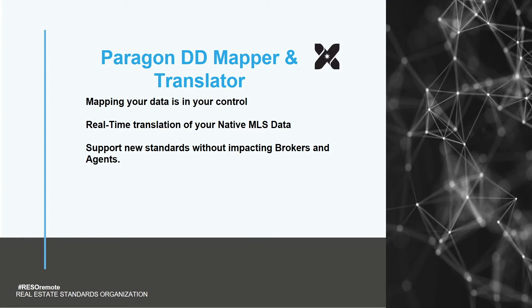Paragon utilizes these mappings to dynamically convert your data on the fly when requested by third-party vendors. What that means is all the feeds you've set up over the years, all the payloads you've identified and security attached — when they are consumed via the Web API, all of those payloads are now in real time converted to a Data Dictionary format. Both of these utilities allow you to support Data Dictionary without impacting your members. Your input forms and business rules remain unaffected, while the data can come out of Paragon in a RESO standard format. This will allow you to transition your native schema and forms at your own pace over time, instead of having a hard cutover that impacts all of your members at once.